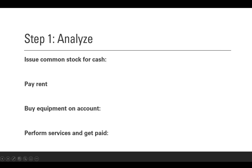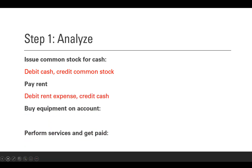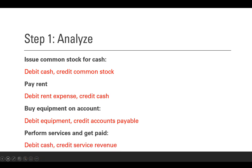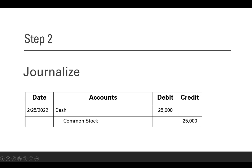Here are four simple transactions. Issue common stock for cash — you're going to be debiting cash and crediting common stock. You pay rent: paying means money is going out, so credit cash and debit rent expense. You buy equipment on account: equipment and accounts payable are both going up, so debit equipment and credit accounts payable. Finally, perform services and get paid: debit cash, credit service revenue.